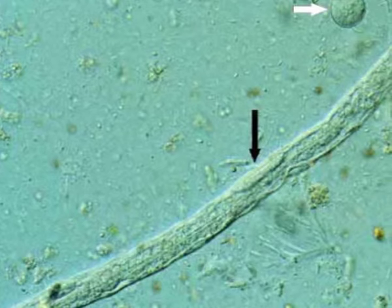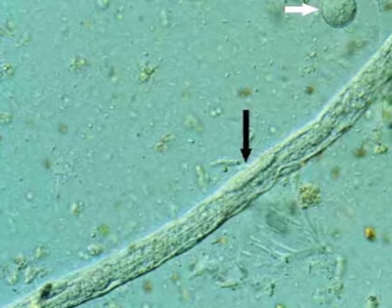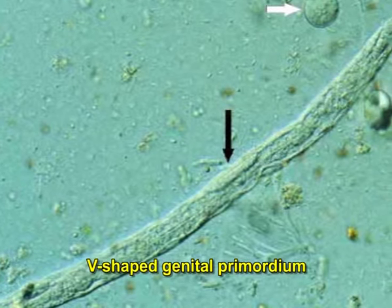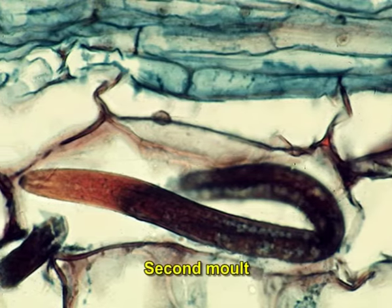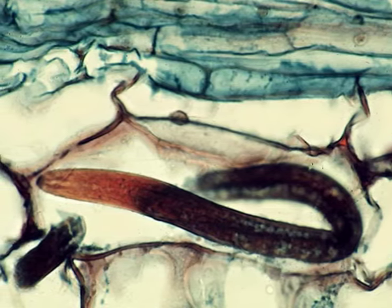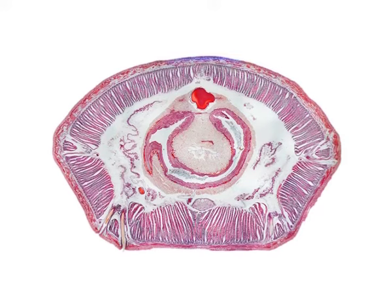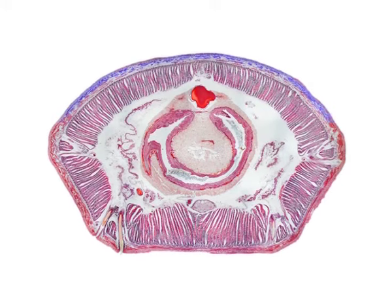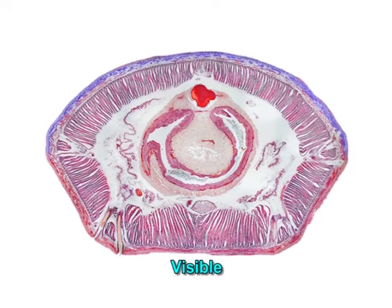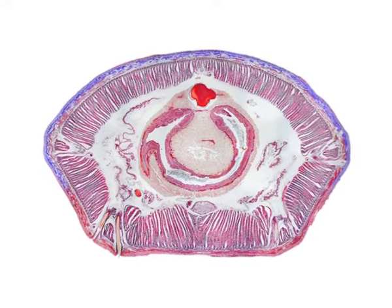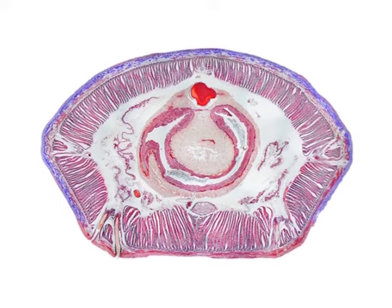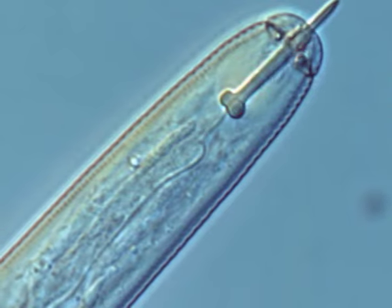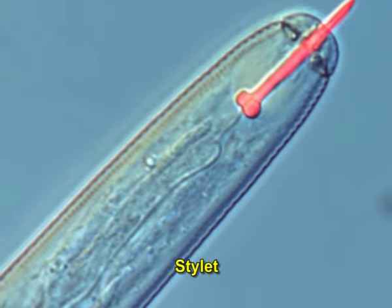The J2s on hatching move about in the soil in search of a suitable host and, on finding one, penetrate the roots just behind the root tip with the help of their stylet. The development of a feeding site known as the giant cell is initiated when J2s fix their head near the vascular tissue with the rest of the body in the cortical region. Giant cells are multinucleated cells produced as a result of karyokinesis without cytokinesis. As feeding commences, the female J2s assume a swollen shape with a V-shaped genital primordium.